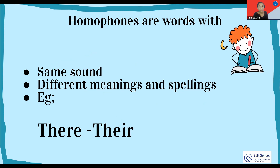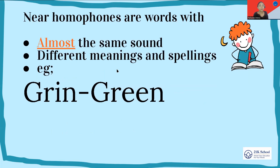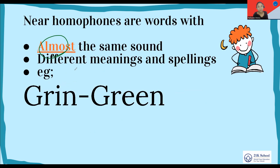Now what about near homophones? Near homophones also sound almost the same, however they have different meanings and spellings. Please emphasize on the word 'almost' — that means they do not sound exactly the same; there is a little variance. For example, 'grin' is with a short E sound and 'green' is with a long E sound. 'Grin' means a sly smile on your face, and 'green' is an adjective — a color used to describe a noun.